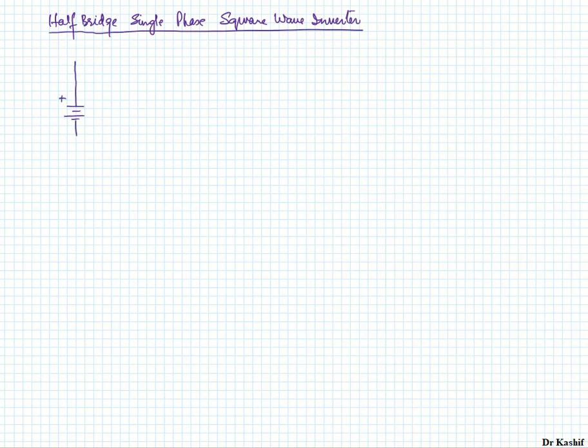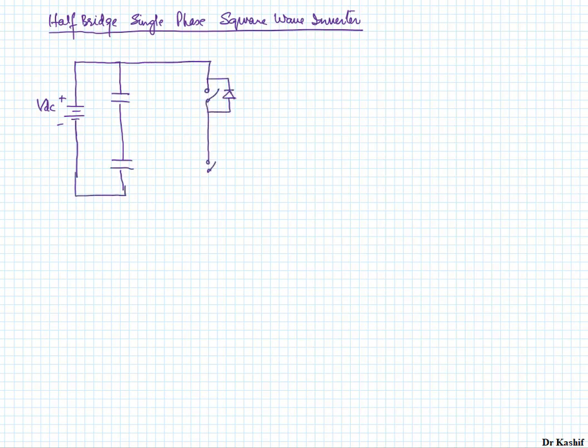Welcome to this lecture series. In today's lecture we are going to discuss the half-bridge single-phase square wave inverter. The circuit diagram for this half-bridge single-phase inverter consists of two switches and two capacitors connected in parallel to the DC source. Usually these two capacitors are of equal values so that the voltage across each capacitor is the same. The supply voltage is plus Vdc and the voltage across each capacitor will be Vdc/2.